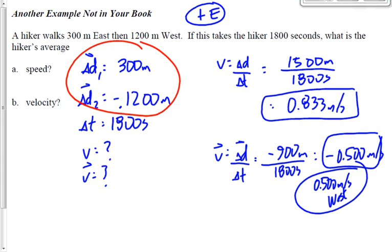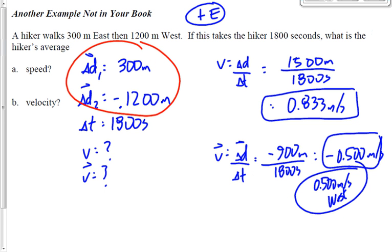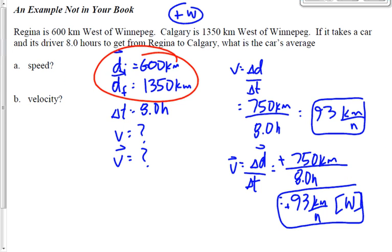Speed and velocity are different values here because the hiker changed direction. They will always have the same value when there's no direction change. Remember: position means where you are; displacement means how far you've gone. With two positions, subtract; with two displacements, add.